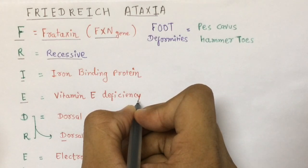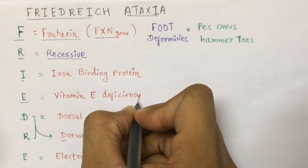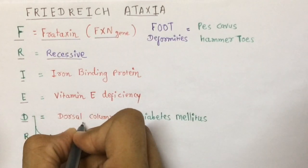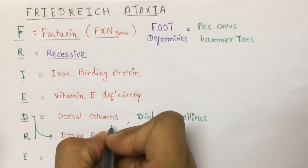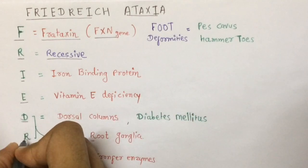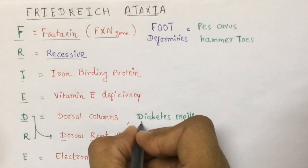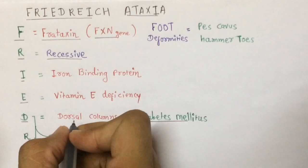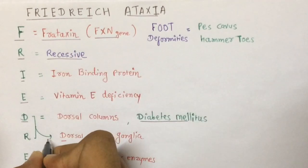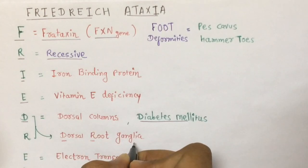From E, you can remember vitamin E deficiency — it is not part of Friedreich's Ataxia, but its presentation is similar. From the D, you can remember dorsal column, which is responsible for loss of vibratory sense and proprioception. From D, you can also remember diabetes mellitus, which is part of Friedreich's Ataxia.